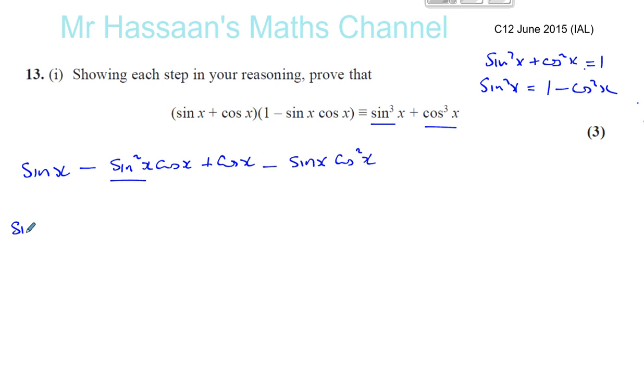This is the type of question where you might not see the whole picture until you've done a few little steps. All right, so you're using some sort of logic here to do this. Because I know there's a cos cubed, I'm thinking I'll get a cos cubed if I have cos x times cos squared x, which I'll get when I have this, right? Then you've got plus cos x.